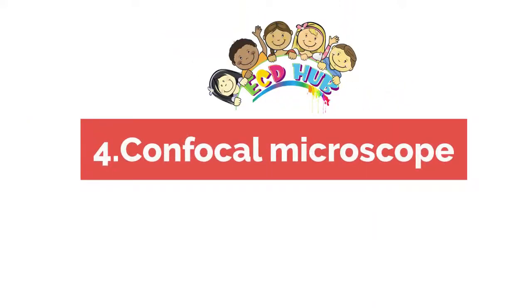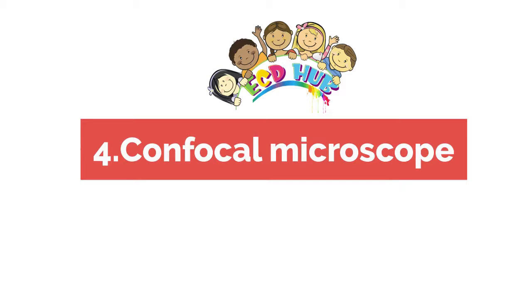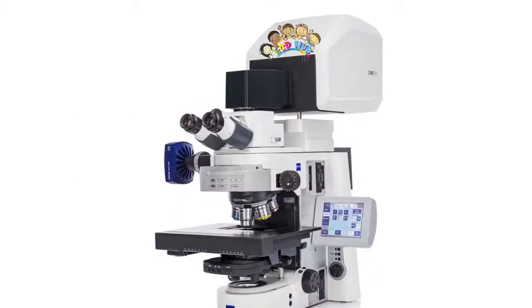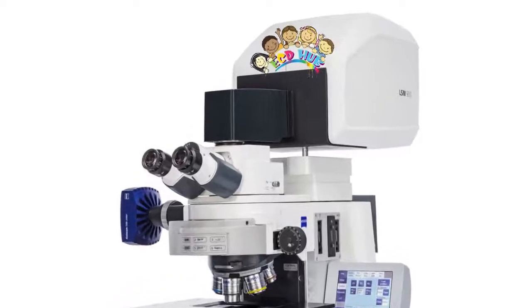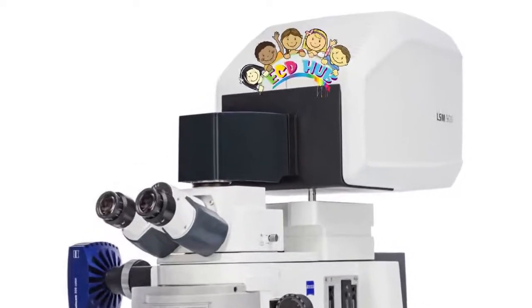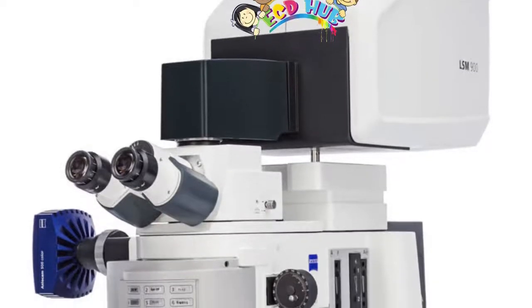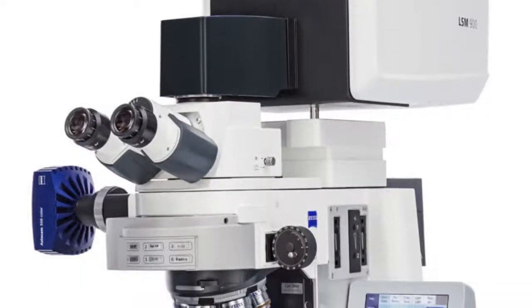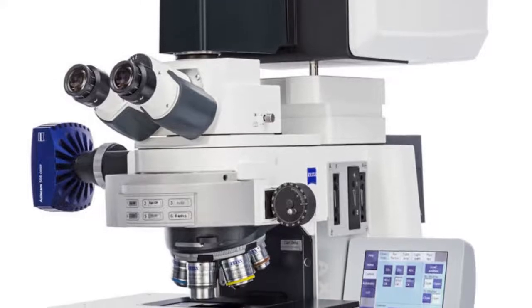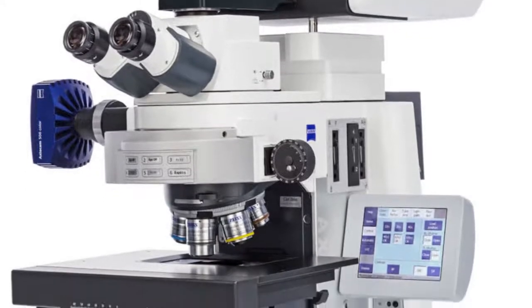The fourth one is confocal microscope. Unlike stereo and compound microscopes, which use regular light for image formation, the confocal microscope uses a laser light to scan samples that have been dyed. These samples are prepared on slides and inserted. Then, with the aid of a dichromatic mirror, the device produces a magnified image on a computer screen.